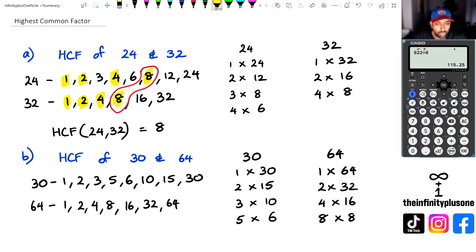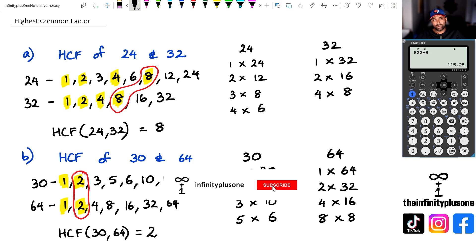Next I'm going to highlight all my common factors. I've got 1, I've got 2 and I think that's basically it. So in this case the highest common factor between 30 and 64 is equal to 2. That's just a couple of quick examples of how to find highest common factors between two numbers.